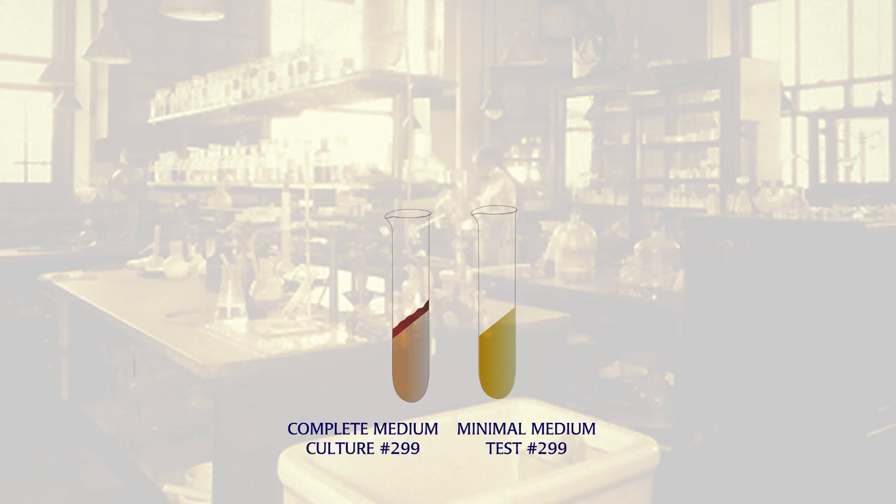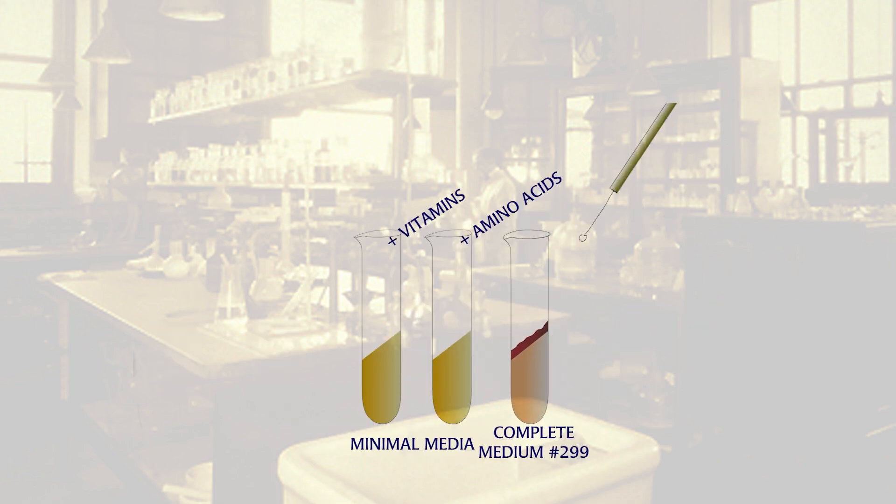They then tried growing culture 299 on minimal medium supplemented with either amino acids or vitamins. They found that culture 299 did not grow on minimal medium with amino acid supplements, but did grow on minimal medium with vitamin supplements. Therefore, culture 299 must not be able to make one of the vitamins.